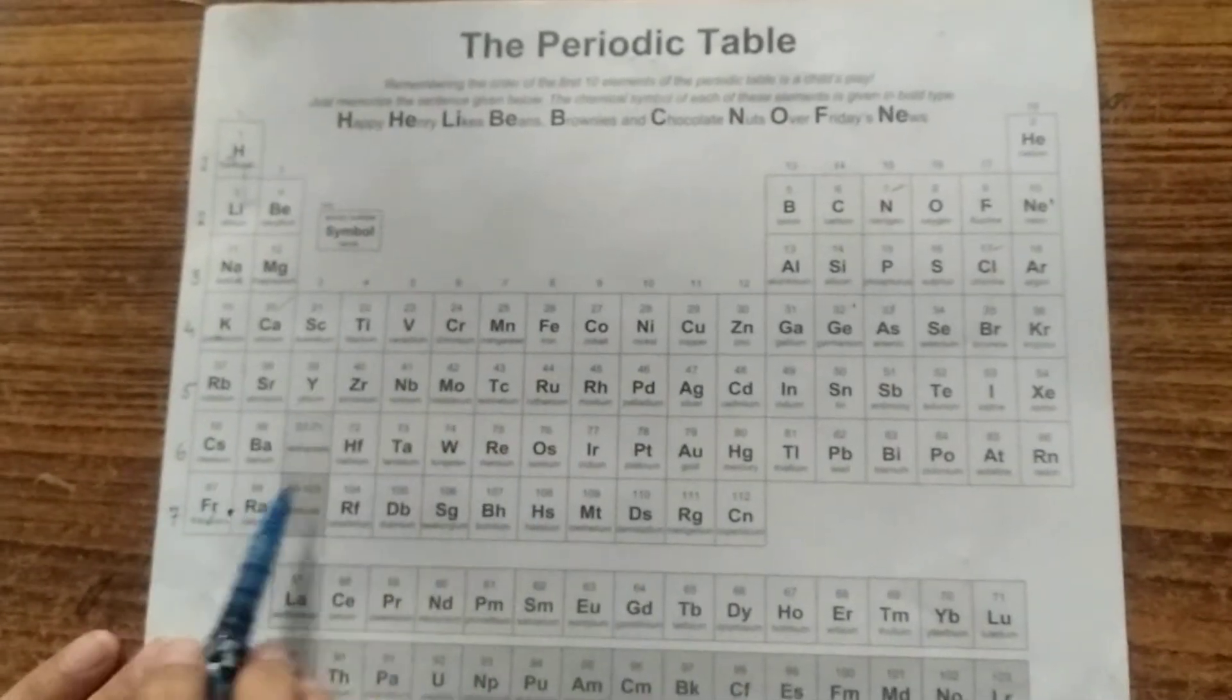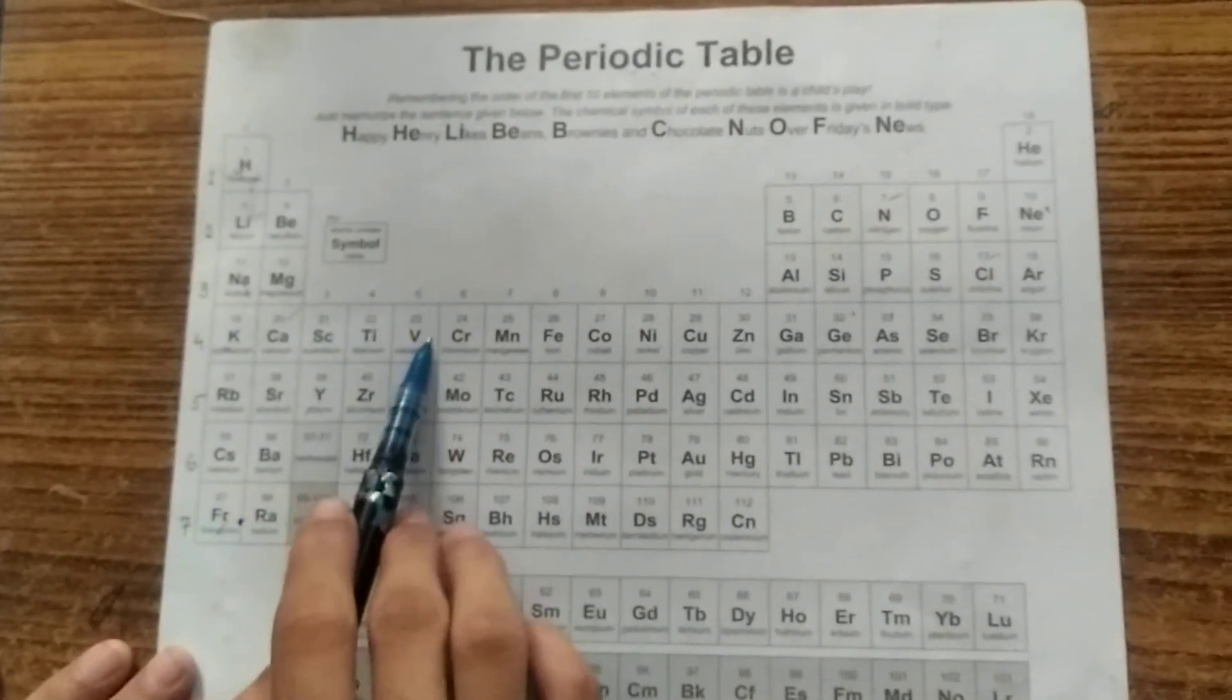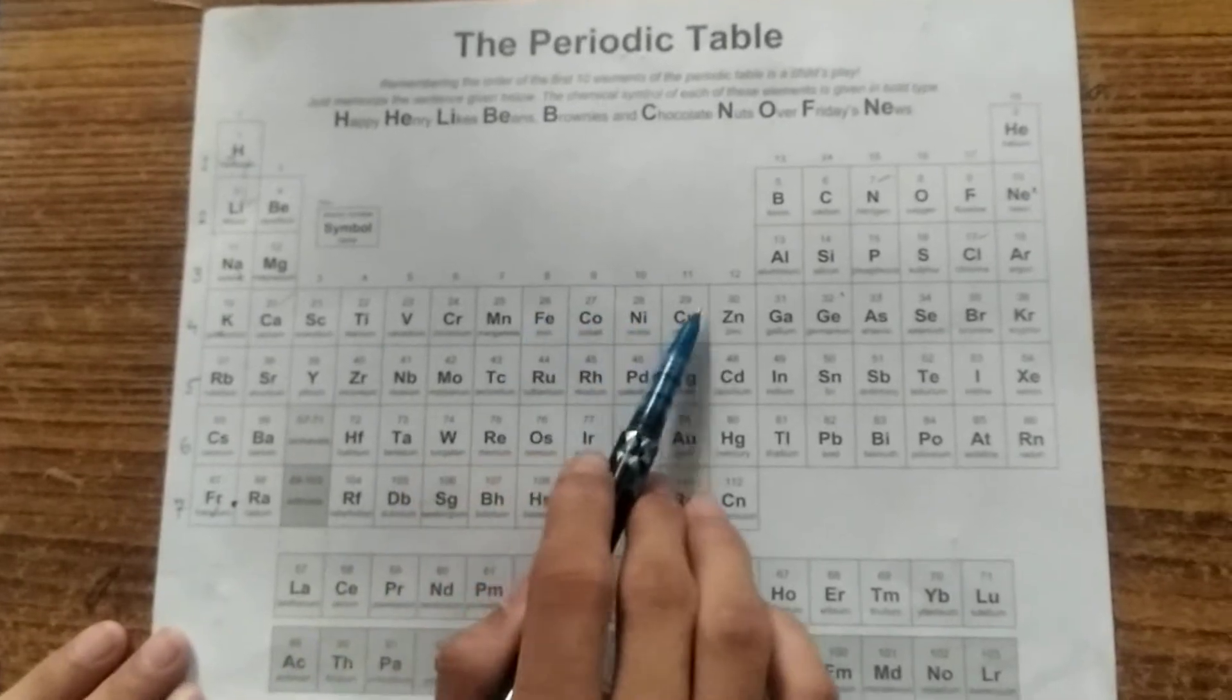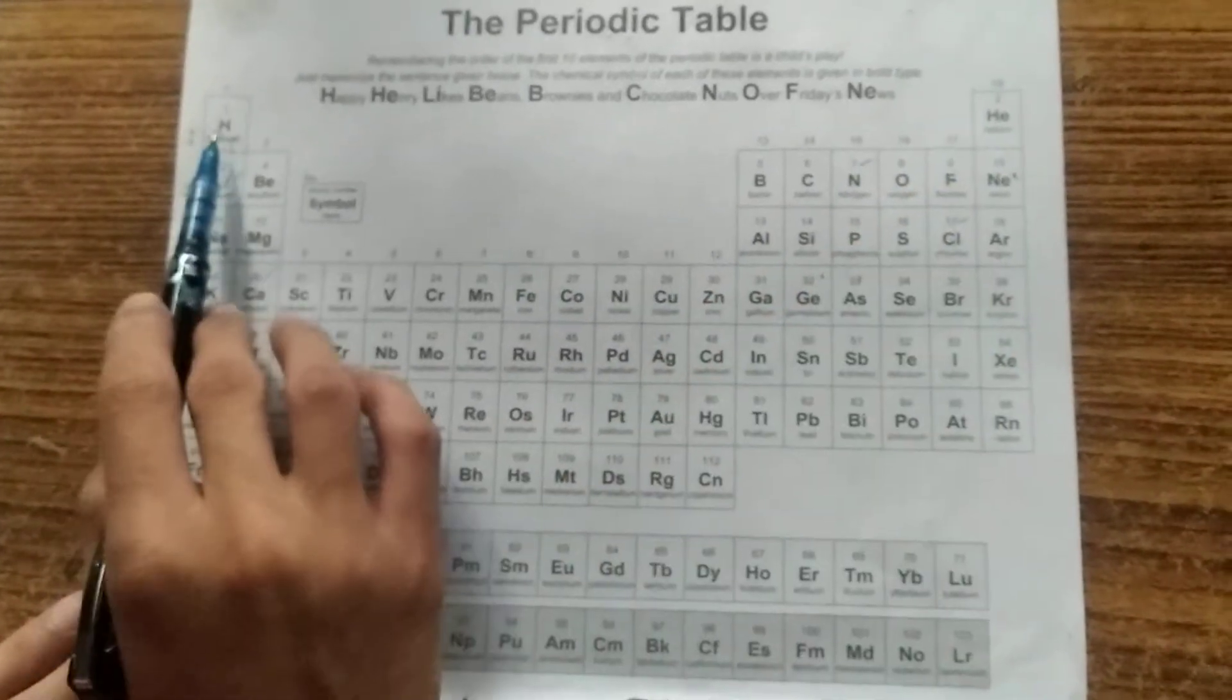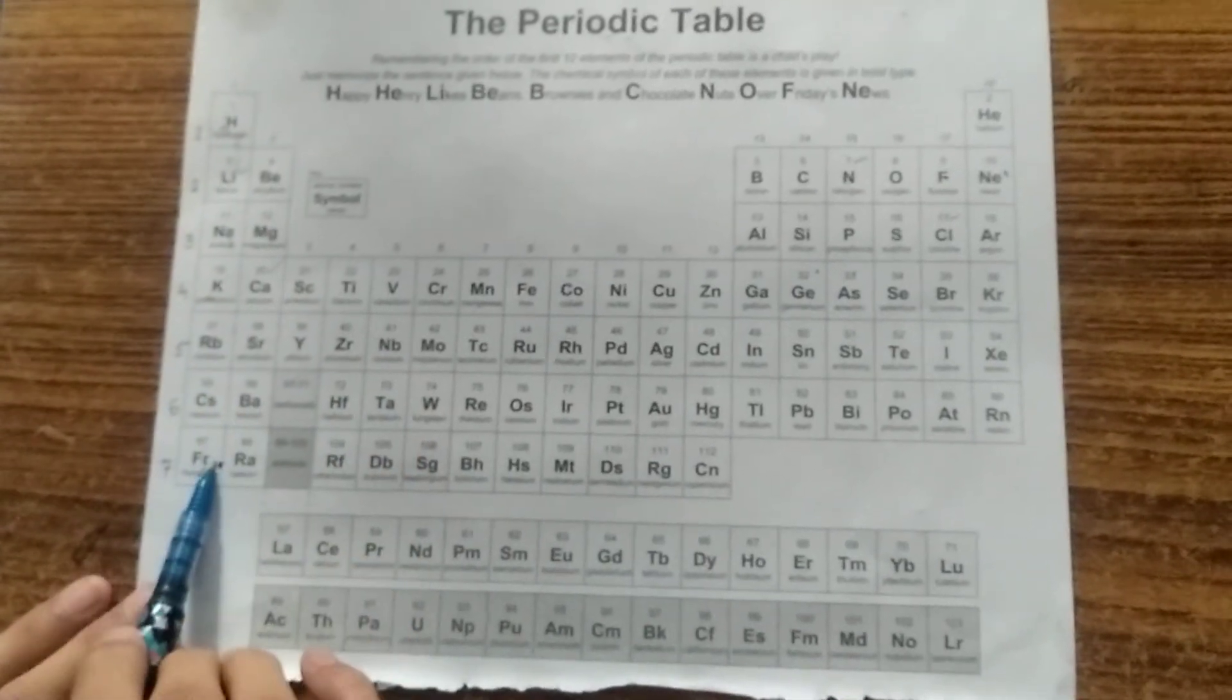In that there are 18 vertical columns 1, 2, 3, 4, 5, 6, 7, 8, 9, 10, 11, 12, 13, 14, 15, 16, 17, and 18. And 7 periods 1, 2, 3, 4, 5, 6, 7.